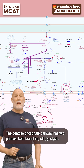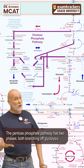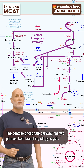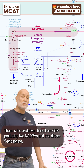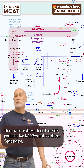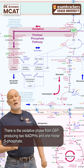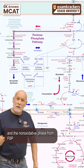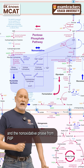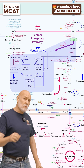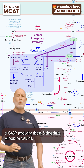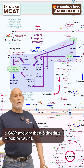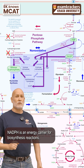The pentose phosphate pathway has two phases, both branching off glycolysis. There is the oxidative phase from G6P, producing two NADPHs and one ribose 5-phosphate, and the non-oxidative phase from F6P or GA3P, producing ribose 5-phosphate without the NADPH.